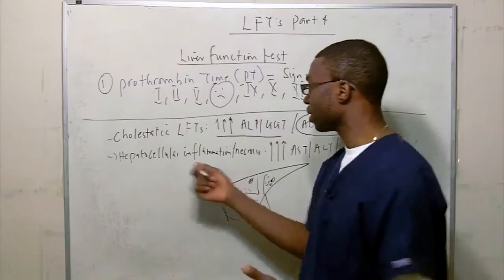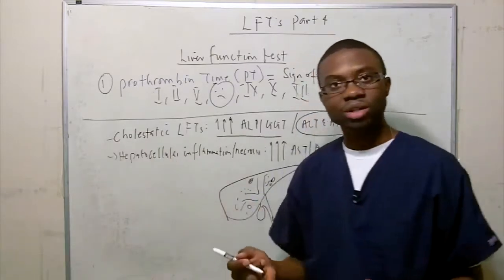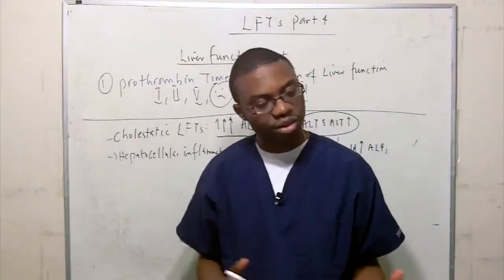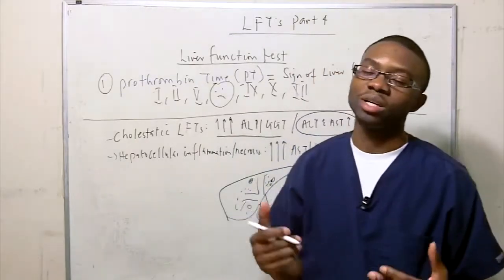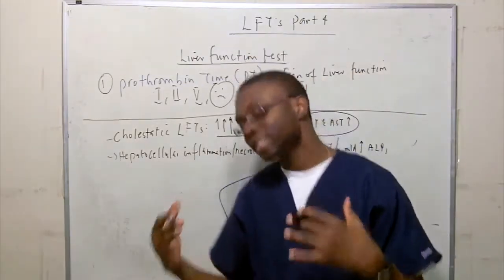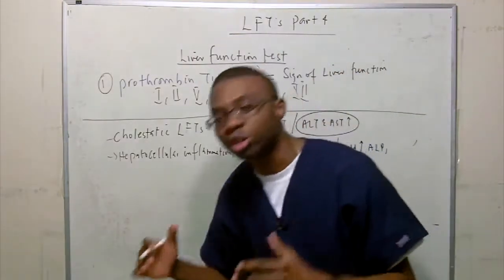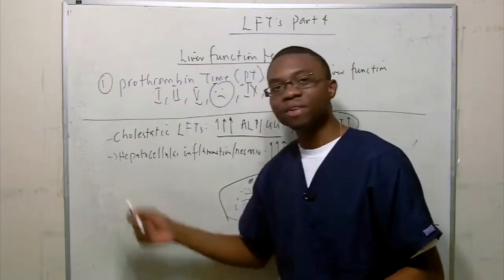You're going to see a lot more alkaline phosphatase or GGT. The reverse is so, what do we see cholestatic jaundice or cholestatic liver function? When you have what? Cholecystitis, ascending cholangitis, choledocholithiasis.